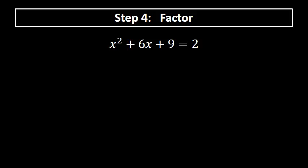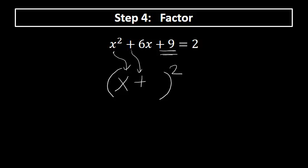Step four is to factor. After completing the square, x squared plus 6x plus 9 is a perfect square trinomial. To factor it: bring down x, bring down the plus sign, take the square root of 9 which is 3, and write x plus 3 squared. That is the factorization of x squared plus 6x plus 9.